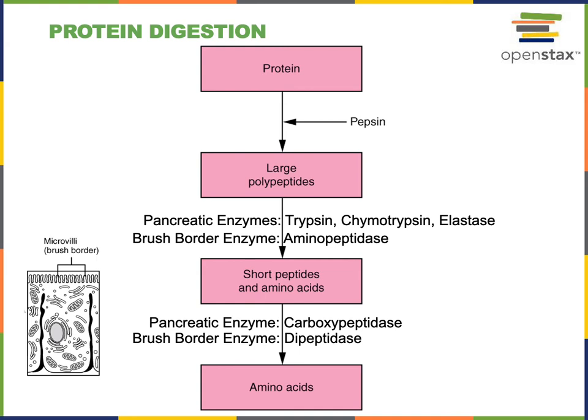The pancreatic enzyme carboxypeptidase and the brush border enzyme aminopeptidase catalyze hydrolysis from opposite ends of a peptide. The amino terminus (N-terminus) is the opposite end from the carboxy terminus (C-terminus), and these enzymes remove one amino acid at a time from the free end of a peptide. Aminopeptidase is a brush border enzyme produced by the enterocytes of the small intestine.